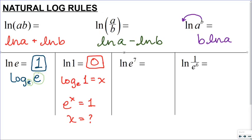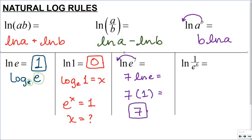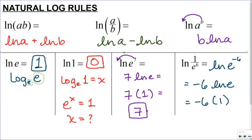In this next problem, I can bring that 7 to the front of my equation and make this 7 times the natural log of e. We just showed that the natural log of e is 1, so my answer is 7. On the last problem over here, I'm going to rewrite this as the natural log of e to the negative 6th. I bring the negative 6 to the front, and since the natural log of e is 1, our answer is negative 6.